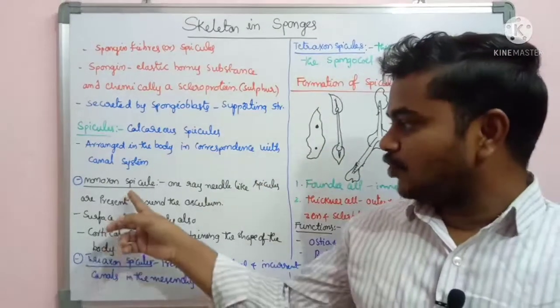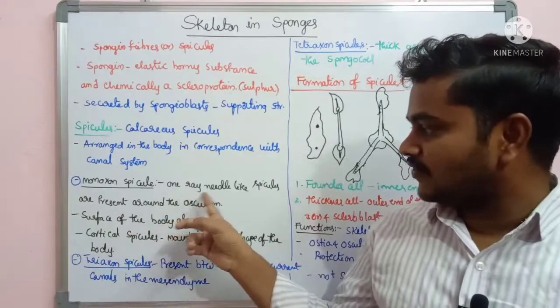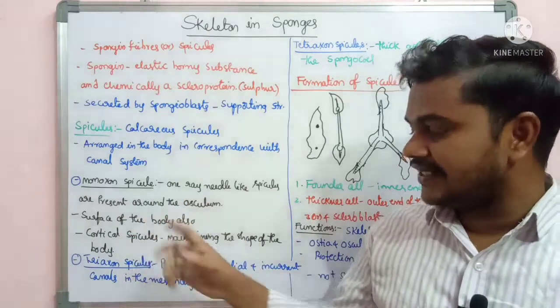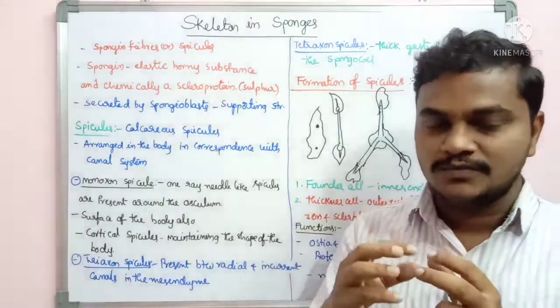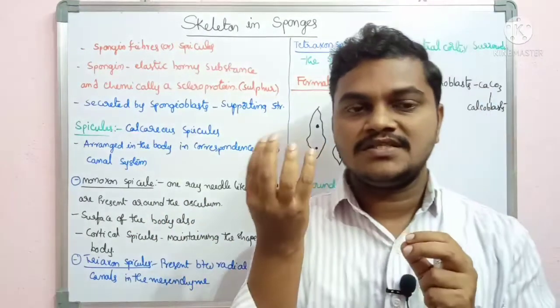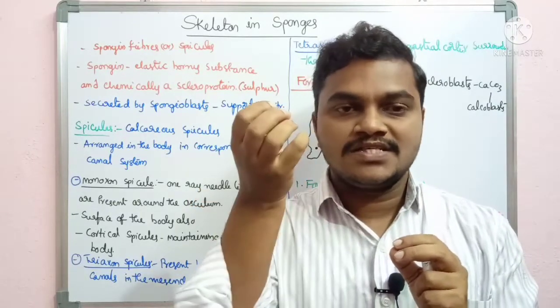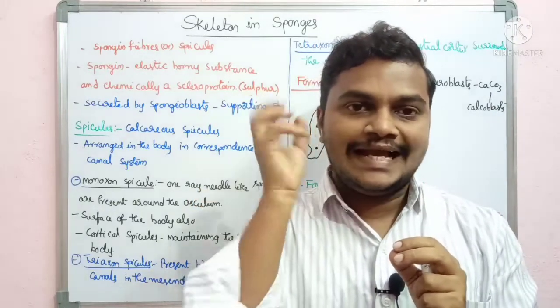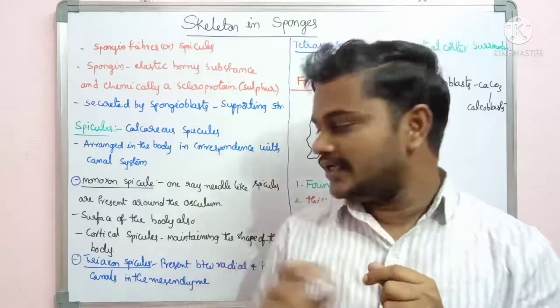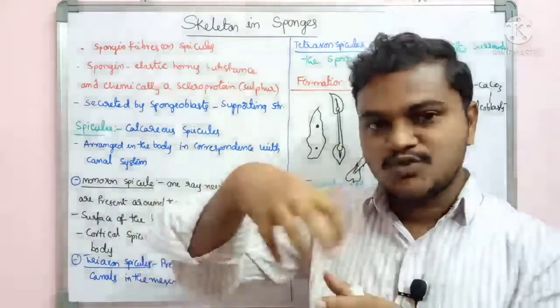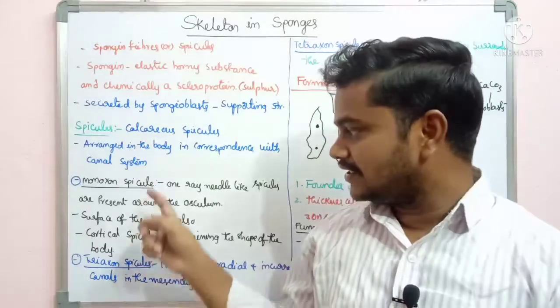One-rayed, needle-like spicules are present around the osculum. The osculum is the opening of the sponge, which is present at the anterior end of the body.